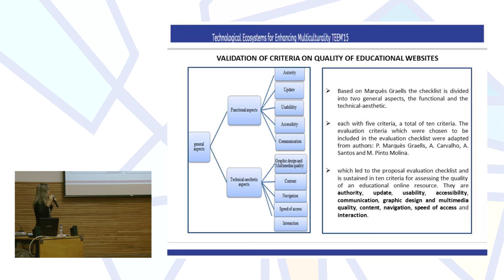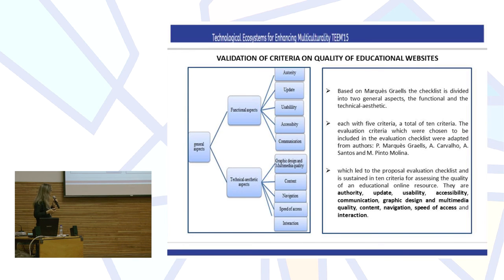Which leads to the proposed evaluation checklist with sustained intent criteria for assessing the quality of educational online resources: authority, update, usability, accessibility, communication, graphic design and multimedia, quality, content, navigation, speed of access and interaction with the authors of the educational websites.